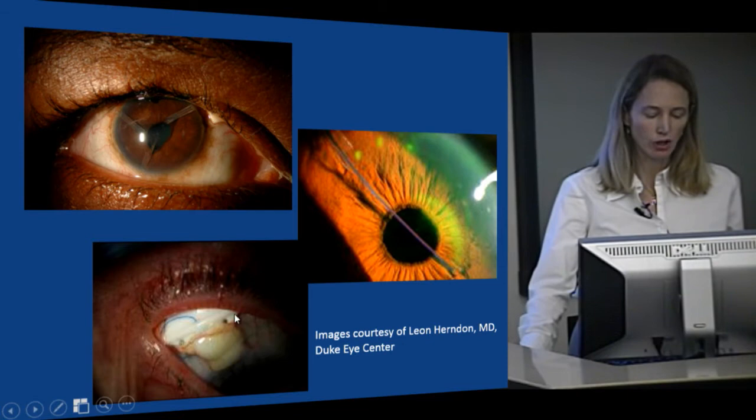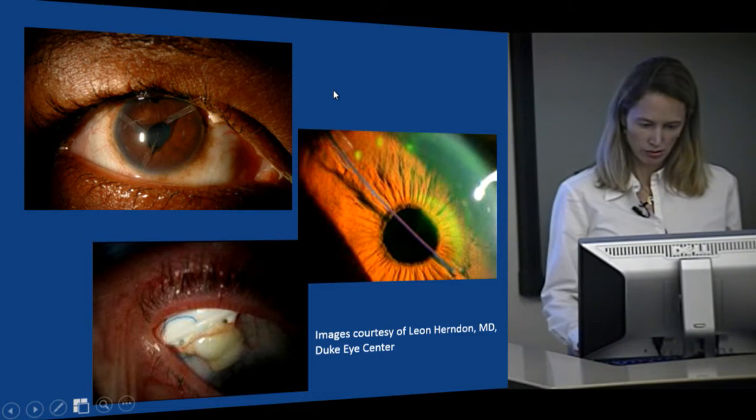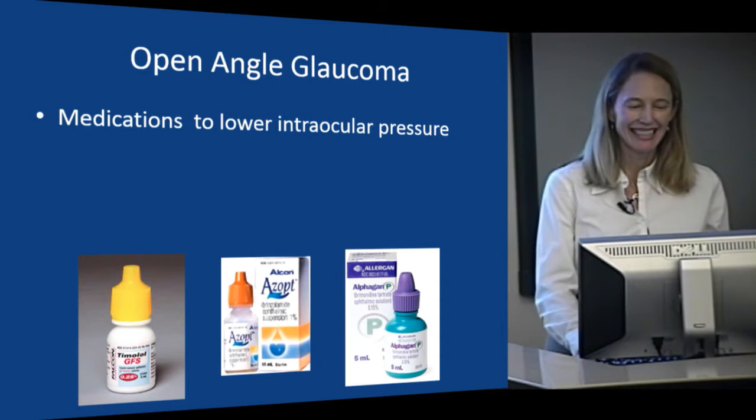These can work really well but they don't get the pressure as low as trabeculectomy, so some patients have had multiple tubes placed — this patient has three tubes in the eye. These are foreign bodies, so they're prone to exposure, which is a long-term risk in patients who've had glaucoma implants. Every now and then something really unusual will happen, like a suture migrating into the anterior chamber — that's a big, long, skinny floater.